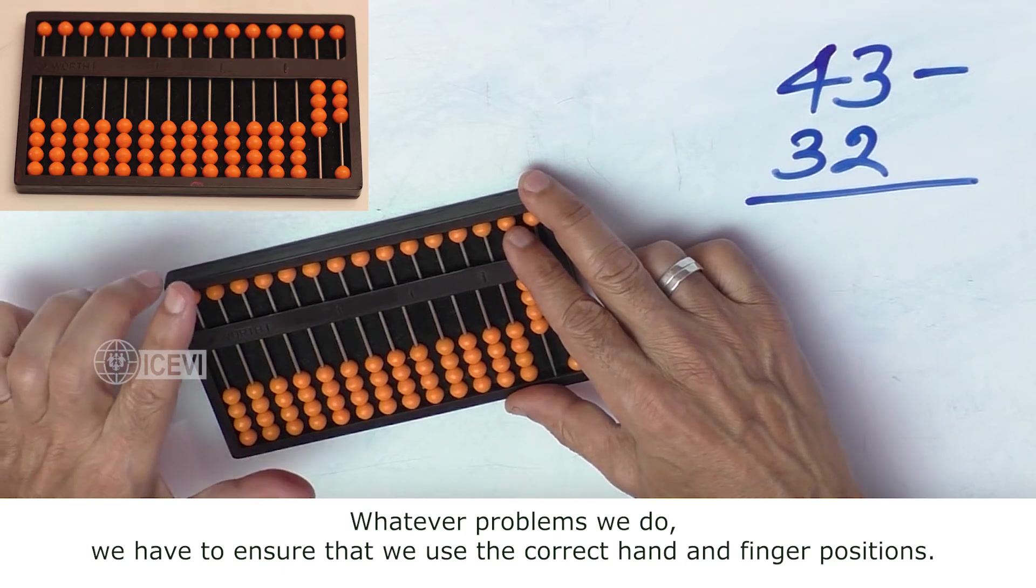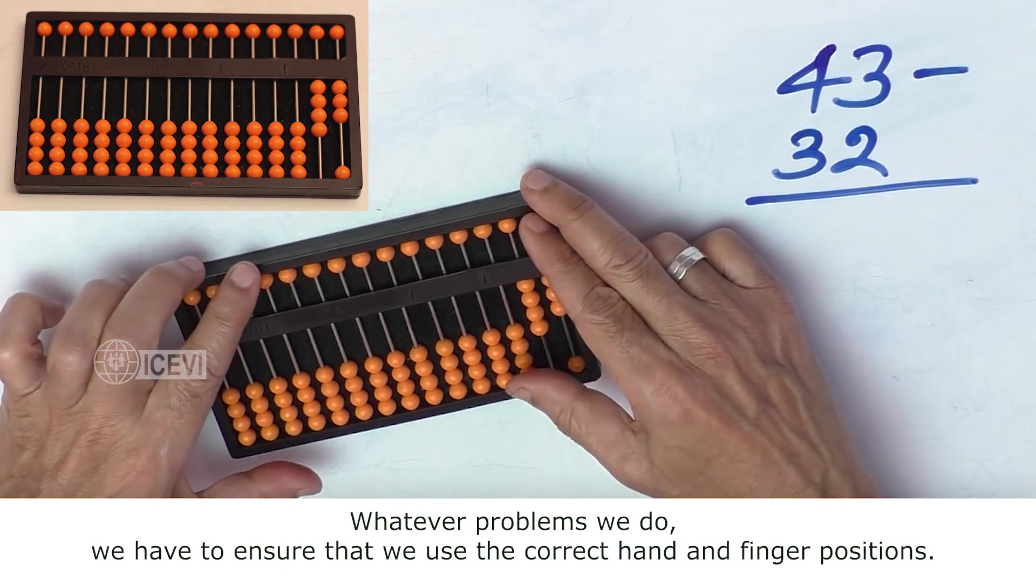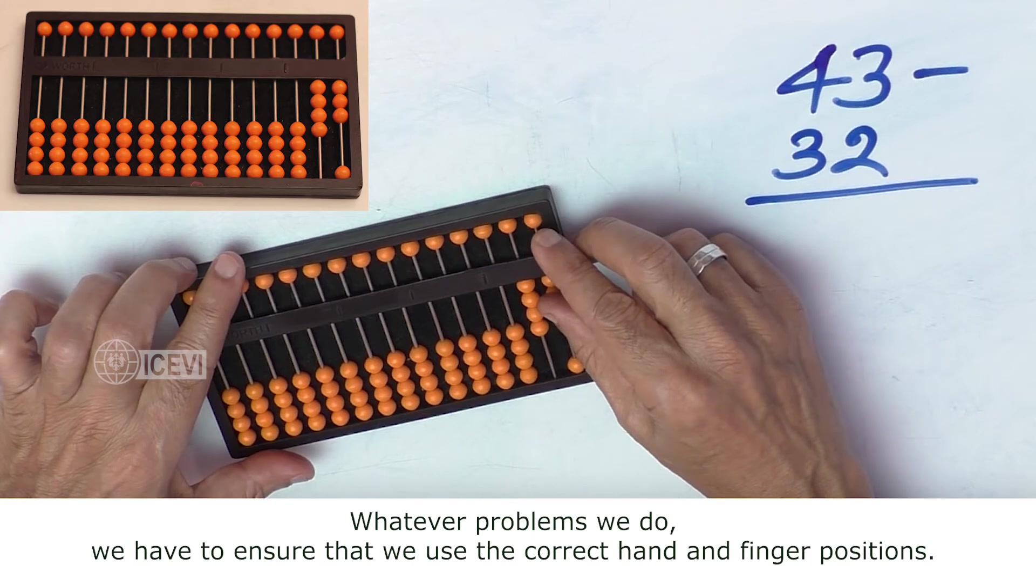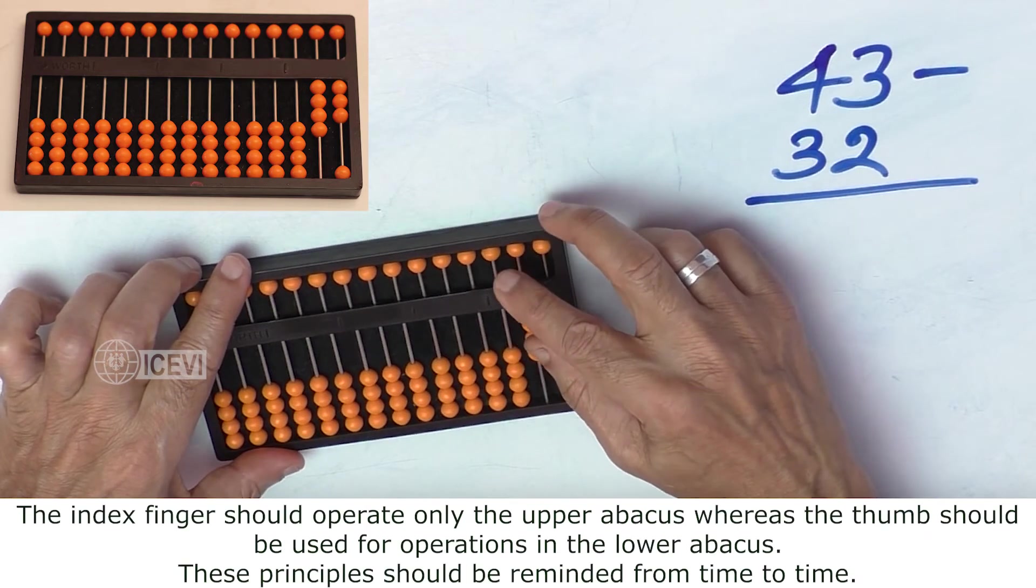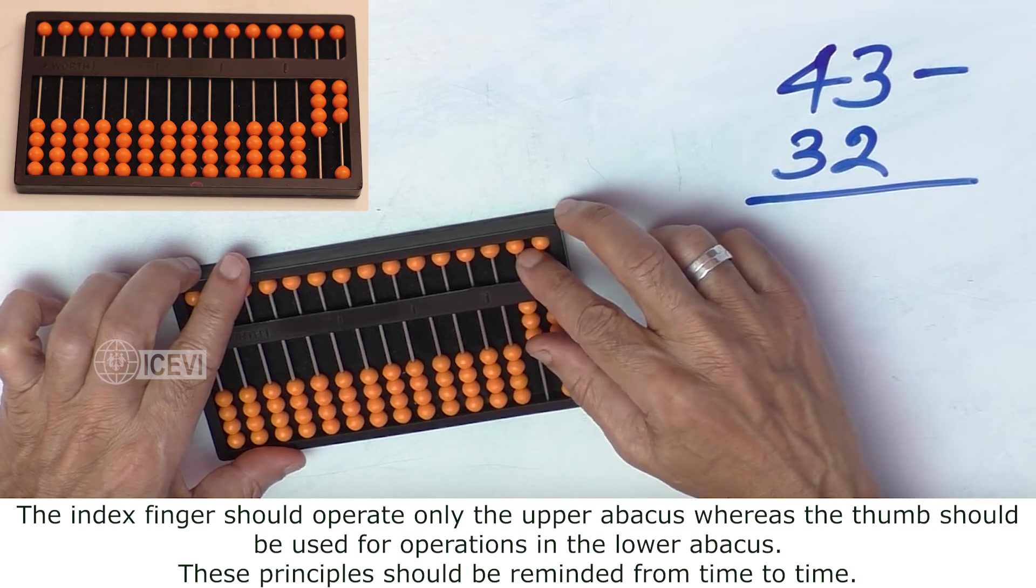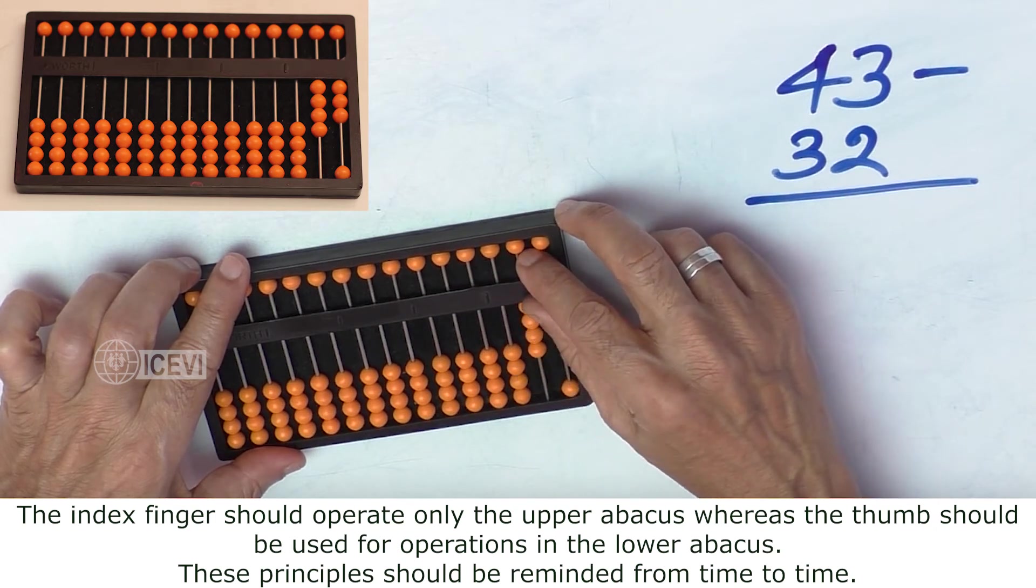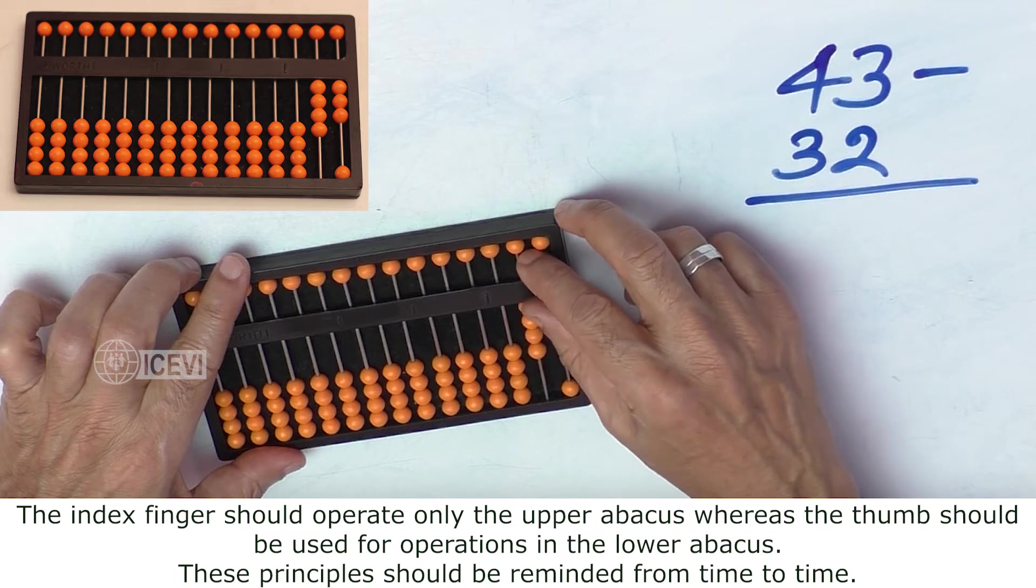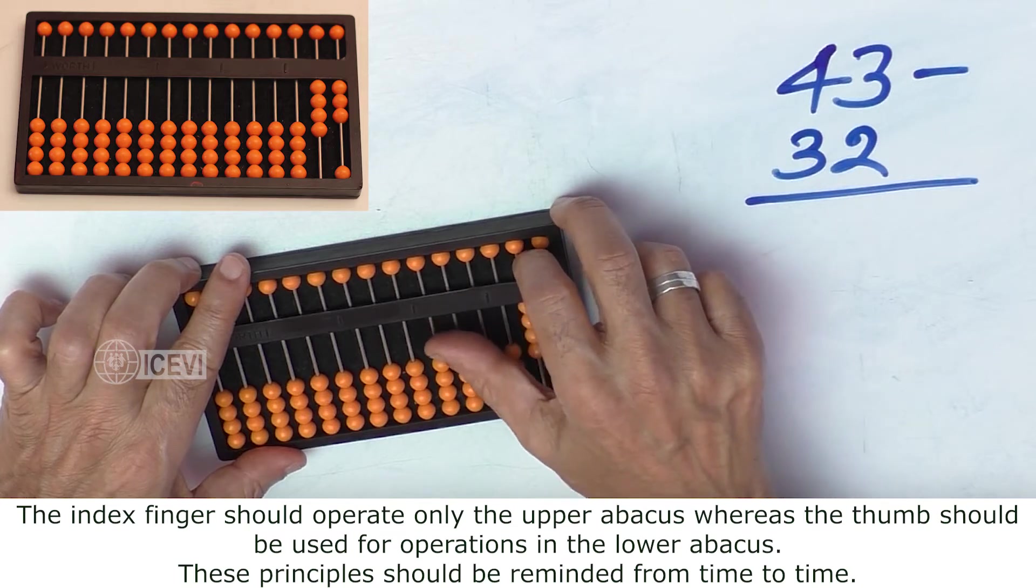Whatever problems we do, we have to ensure that we use the correct hand and finger positions. The index finger should operate only the upper Abacus, whereas the thumb should be used for operations in the lower Abacus.